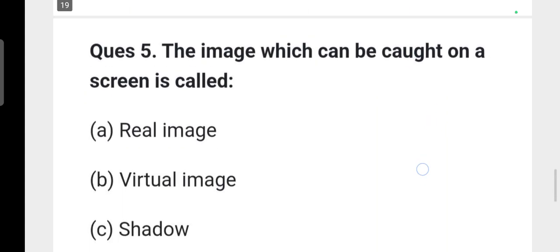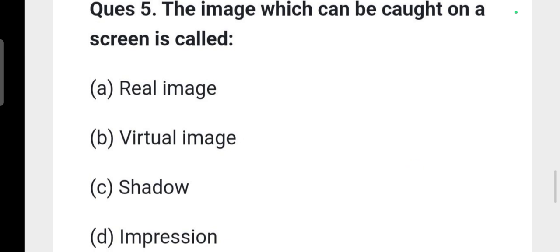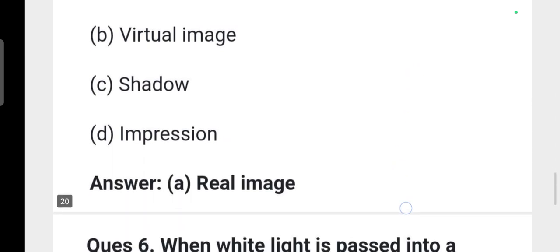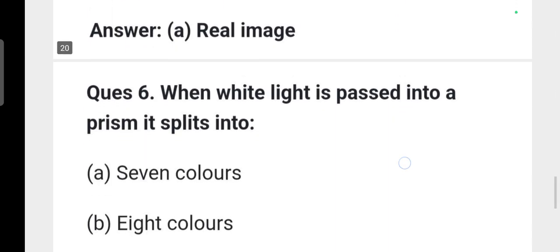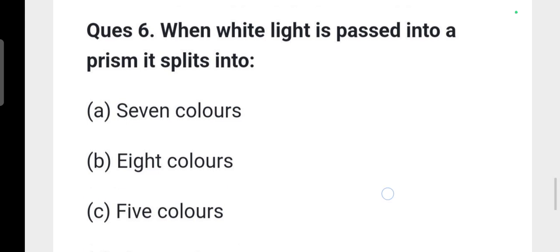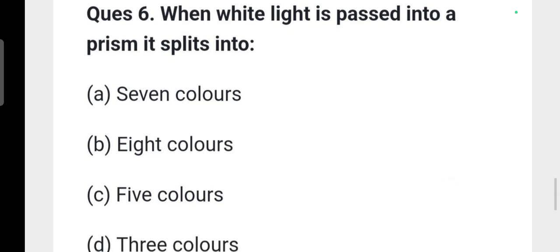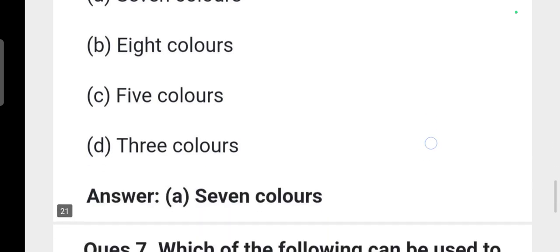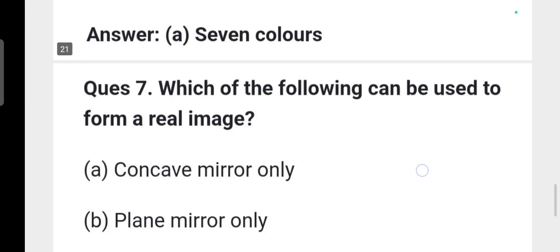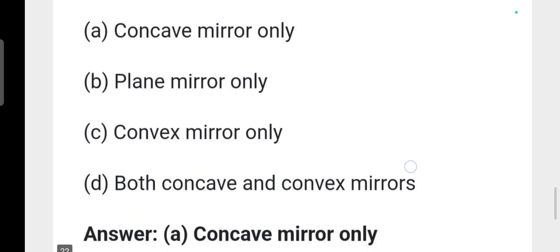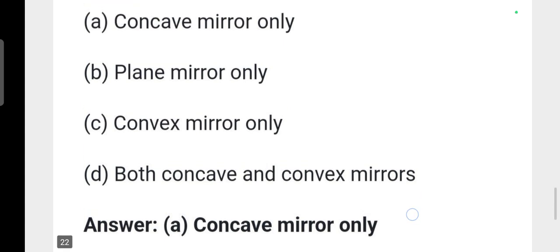Next question: The image which can be obtained on a screen is called real image, option A. Next, when white light is passed into a prism it splits into 7 colors, option A. Next question: Which can be used to form a real image? Concave mirror, option A.